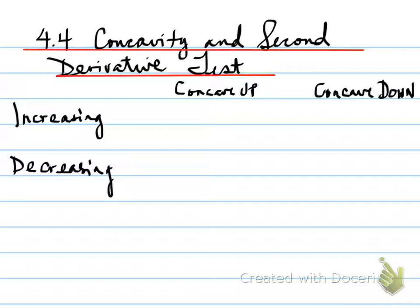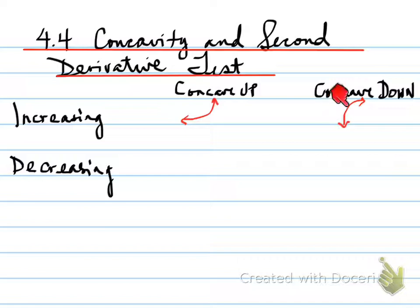An increasing function is concave up when it looks like the following. When it's concave down, it will look like the following. So increasing and concave up looks like this; concave down looks like this.